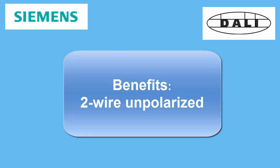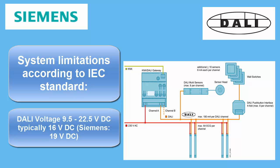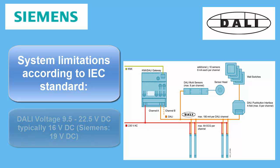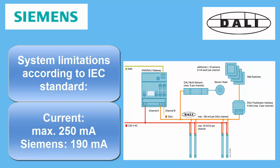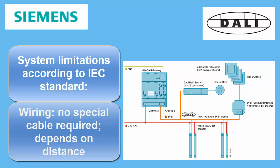Another benefit, mainly for contractors who have to install the wires, is that DALI uses an unpolarized two-wire communication line, which can be wired together with the mains. The system limitations of wiring and addressing are as follows: the DALI voltage ranges between 9.5 and 22.5V DC, typically at 16V. The maximum current on a DALI line may be limited to 250mA. The voltage drop between the central controller and the ballasts may not exceed 2V. The wiring can be done with various cables depending on the required maximum distance between ballasts and DALI master controller.